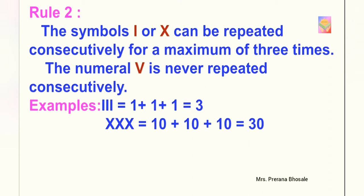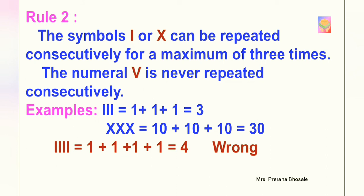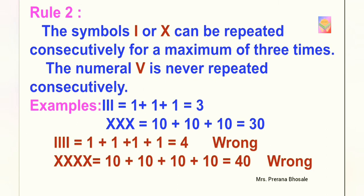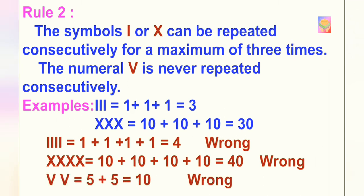But if you repeat I 4 times, it will become wrong. Similarly, if you repeat X 4 times, its value will become wrong. And one more thing you should keep in mind that V is never repeated consecutively.